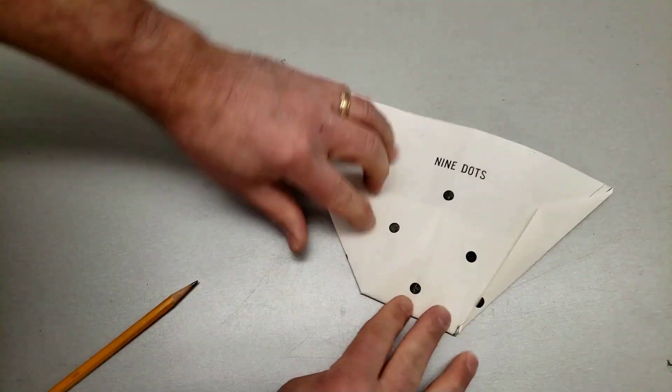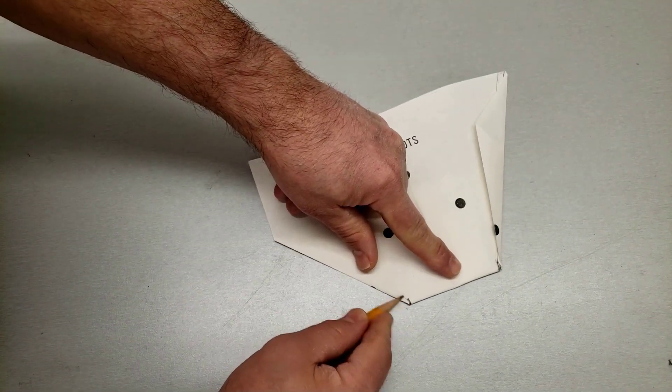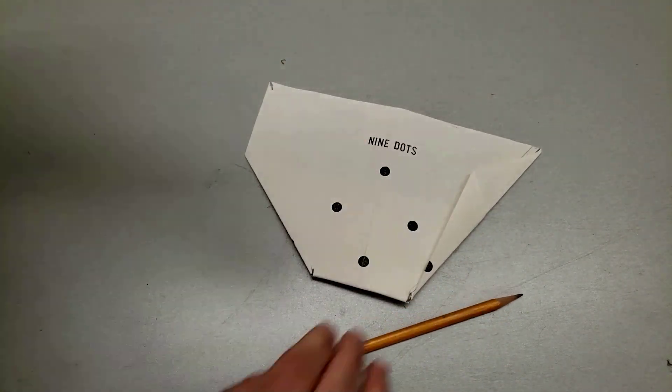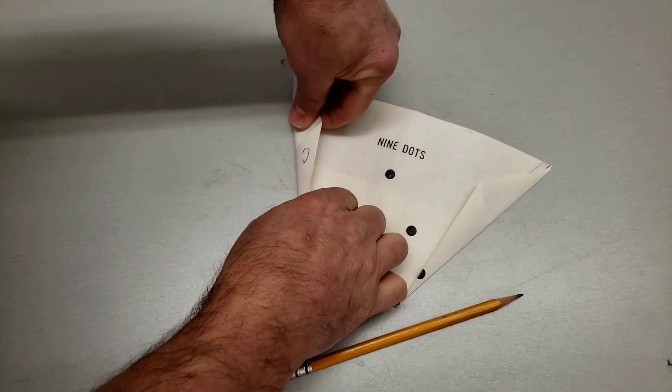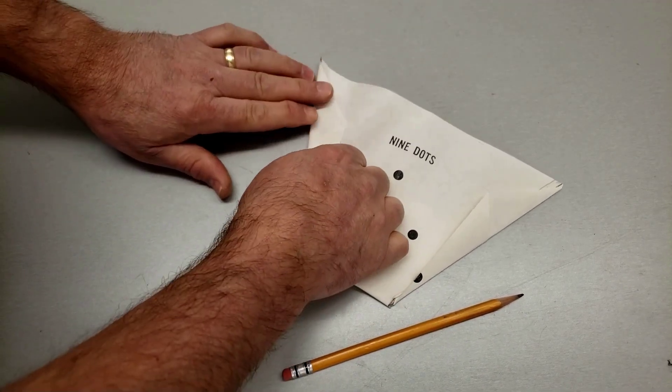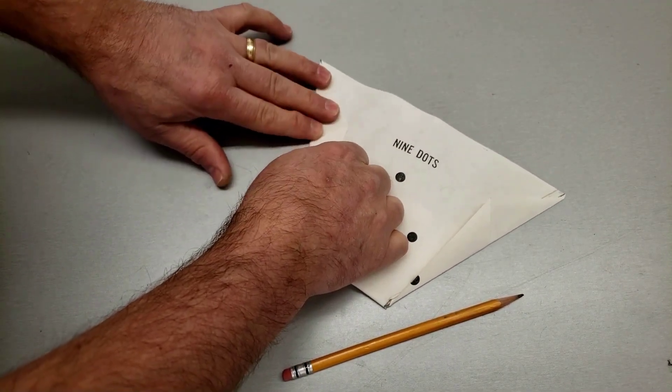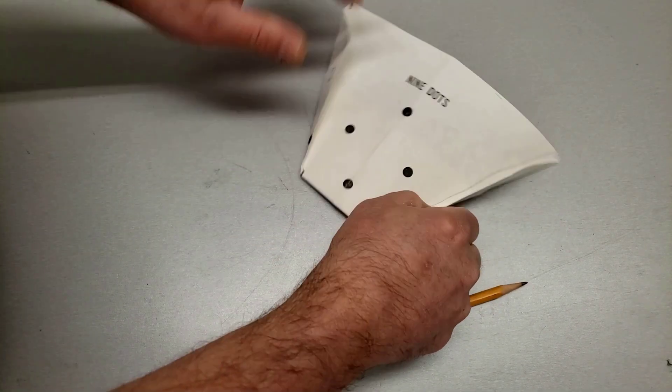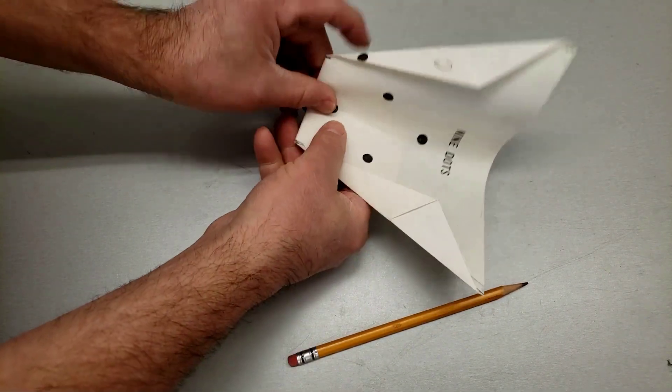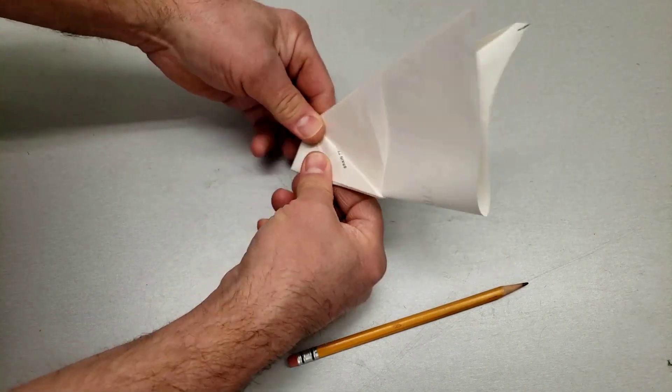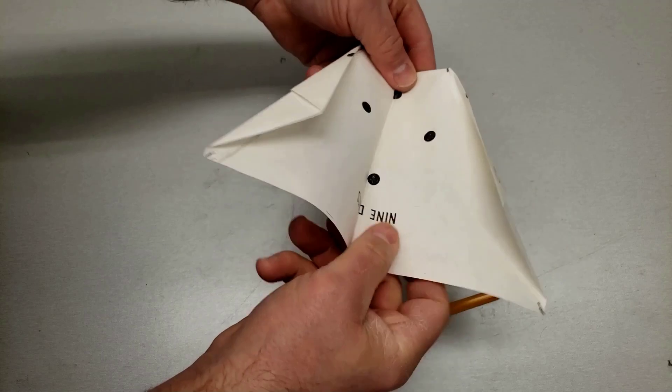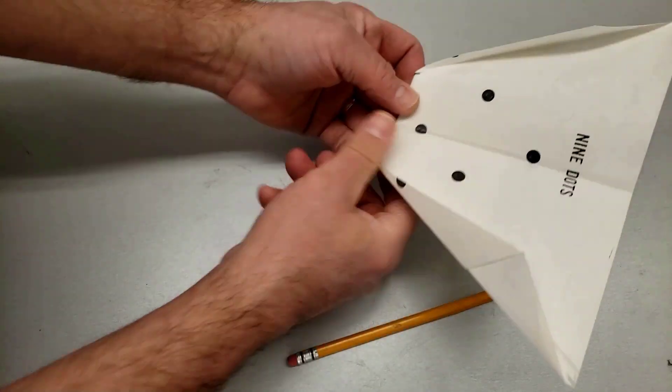And then on the other side same thing, I'm gonna go from this corner to this corner. Notice if you start at the corner it's easier to get that lined up. So now I've got these two wing areas and then we simply have to fold it in the middle and friends you have just built the awesome seagull.